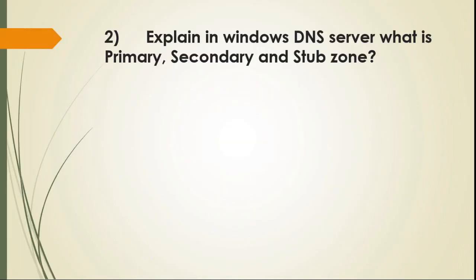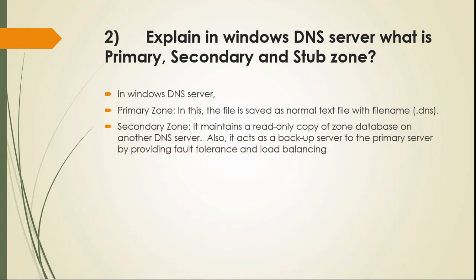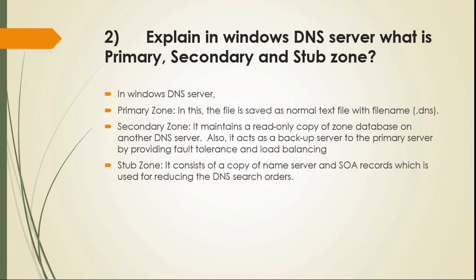Question 2: Explain in Windows DNS Server what is Primary, Secondary, and Stub Zone? Primary Zone: the file is saved as a normal text file with filename .dns. Secondary Zone: it maintains a read-only copy of the zone database on another DNS server; it also acts as a backup server to the primary server by providing fault tolerance and load balancing. Stub Zone: it consists of a copy of name server and SOA records, which is used for reducing the DNS search orders.